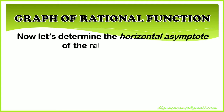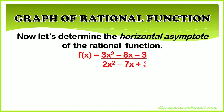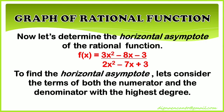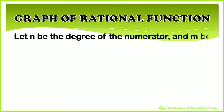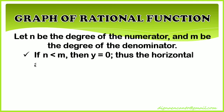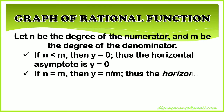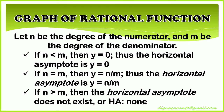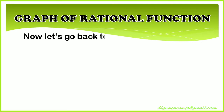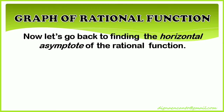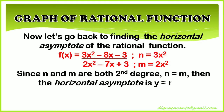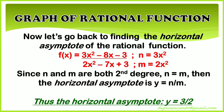Now let's determine the horizontal asymptote. To find it, consider the terms of both the numerator and denominator with the highest degree. Let n be the degree of the numerator and m be the degree of the denominator. If n < m, then y = 0. If n = m, then y = (leading coefficient of numerator) / (leading coefficient of denominator). If n > m, the horizontal asymptote does not exist. Since both numerator and denominator are second degree, n = m, and the horizontal asymptote is y = 3/2.